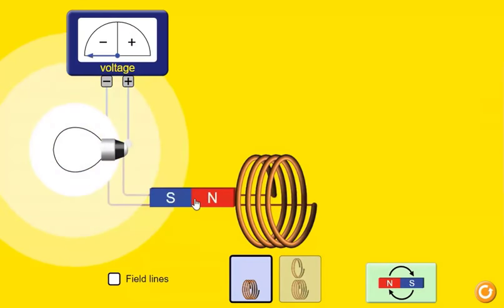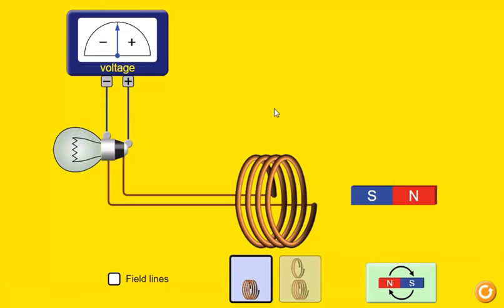In this experiment, Faraday takes a magnet and a coil and connects a galvanometer across the coil. At starting, the magnet is at rest, so there is no deflection in the galvanometer. The needle of galvanometer is at the center or zero position.